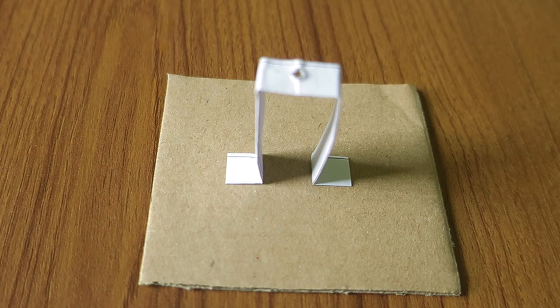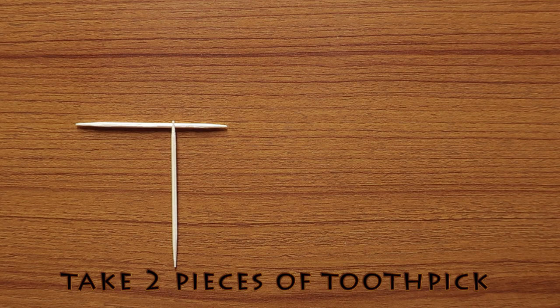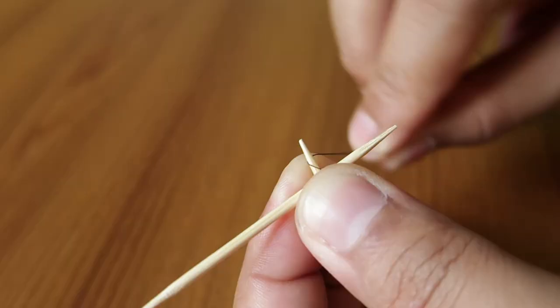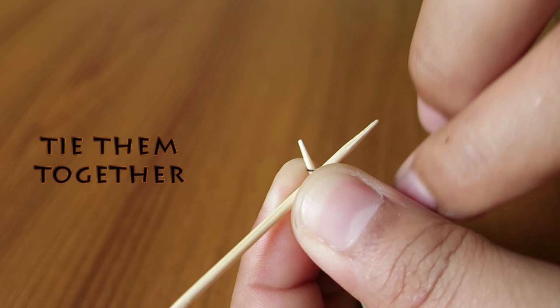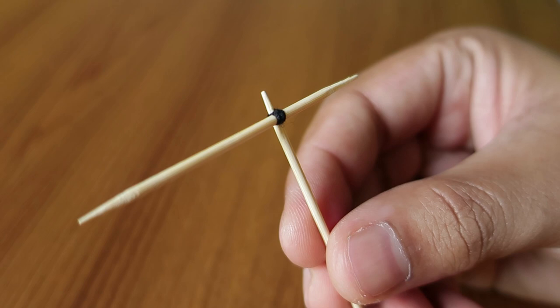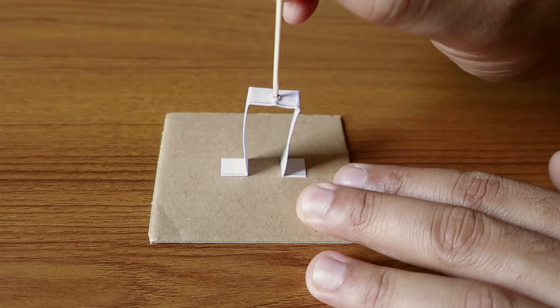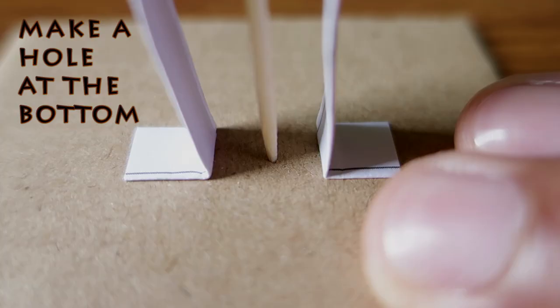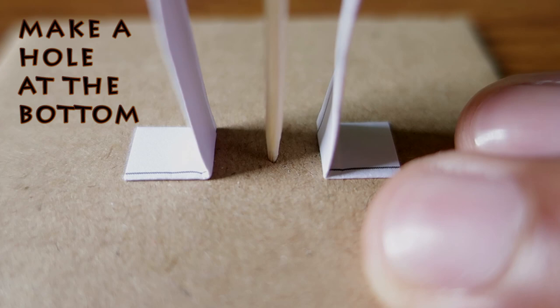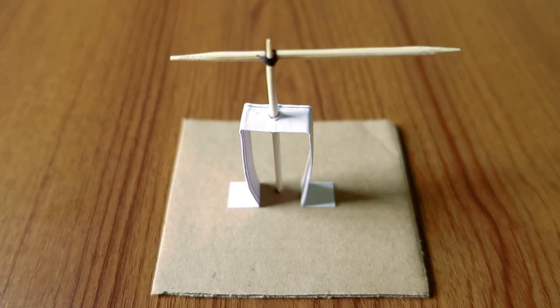Take two pieces of toothpick and sewing thread. Tie them together. Cut the extra thread. Make a hole at the bottom. In the structure, toothpicks can move freely.